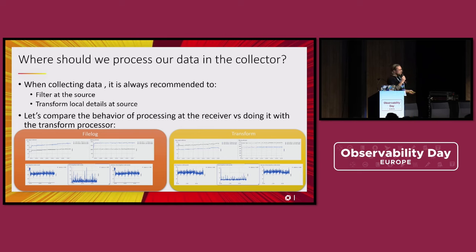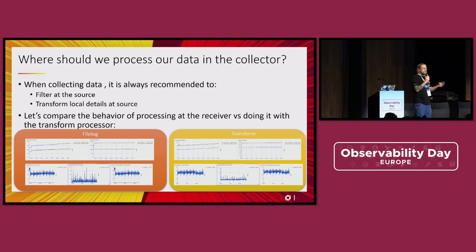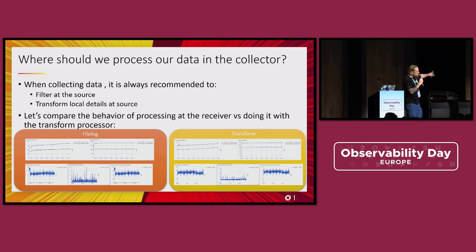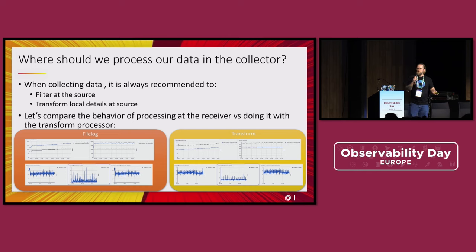The last piece I wanted to cover is processing — where should I do it? The industry says always do it upfront. But I tried to look at the numbers. If you do it on the file log receiver compared to a transform processor, what I saw is that memory usage with transform is actually less. That was a surprise. And the processing time — measuring time to receive, time to process, and overall time — it was the same. So no clear conclusion there. The recommendation remains: filter upfront so you have less processing tasks to do.